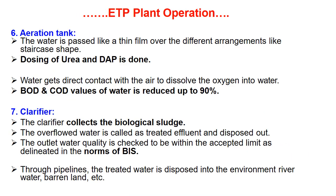Continuing plant operations — number six is the aeration tank. Water is passed as a thin film over staircase-shaped arrangements. Dosing of urea and diammonium phosphate is done. Water gets direct contact with air to dissolve oxygen into the water. The BOD and COD values of water are reduced by up to 90%.